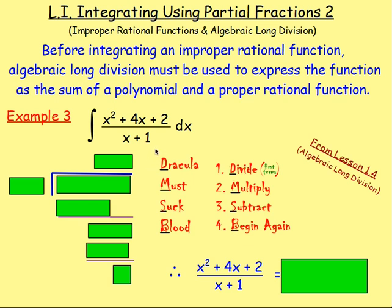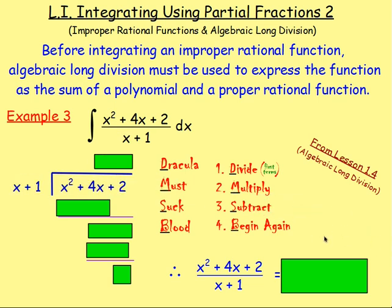For algebraic long division, we think of Dracula — and we think: Dracula must suck blood. Dracula: divide. Must: multiply. Suck: subtract. Blood: begin again. So we're wanting to divide x squared plus 4x plus 2 — that goes under our dividing step — and we're dividing it by x plus 1, which goes to the left.